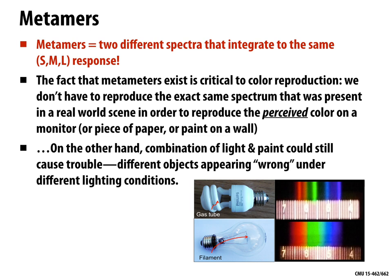One question we can answer is: can two different spectra give us the same color? We said color is described by a spectrum, but when it comes to human perception, can two distinct spectra still be perceived as the same color? That's basically asking: can two different functions integrate to the same value? Can two different curves have the same area underneath them? Yes, of course — there are a lot more curves than there are different areas. Likewise, there are lots of different spectra that can integrate to identical S, M, and L responses. These are called metamers.